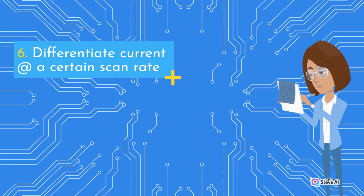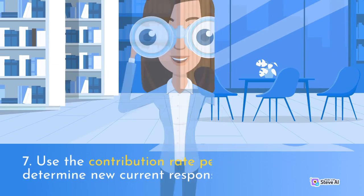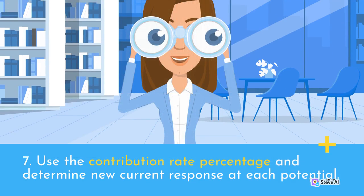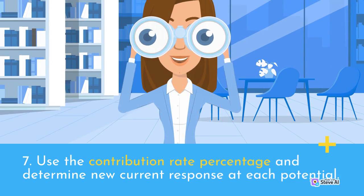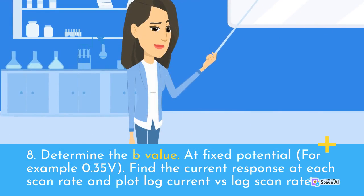Step 6: Differentiate the current at a certain scan rate. Step 7: Use the contribution rate percentage and determine the new current response at each potential. Step 8: Determine the b-value.